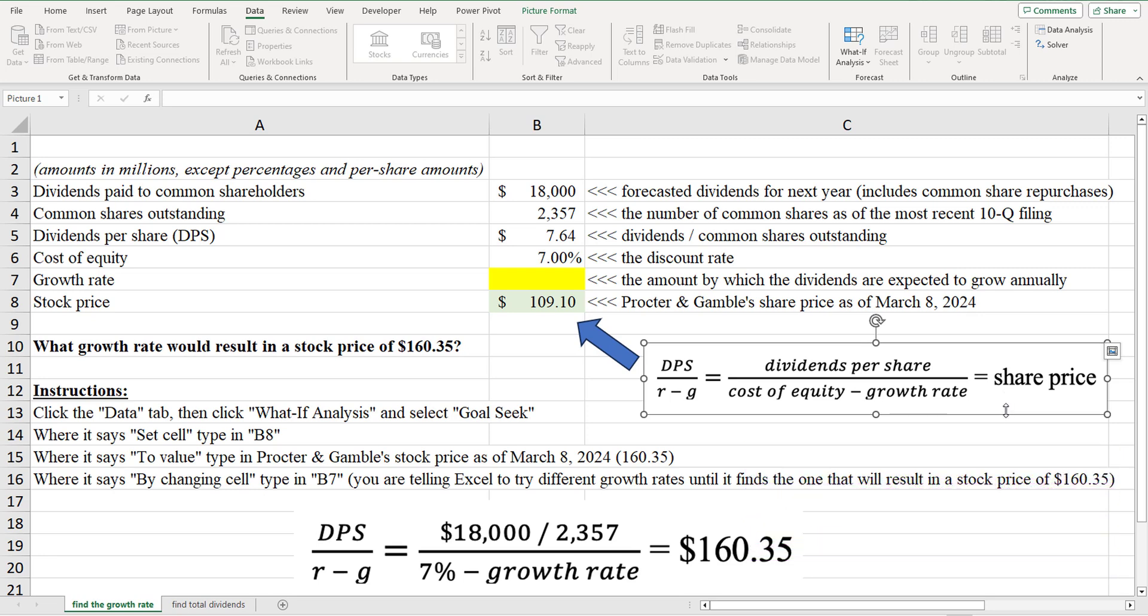Now, here's the thing. Here's how we can reverse engineer the share price. If we know what the existing share price is, and we know the forecasted dividends per share for the company, and we know the company's cost of equity, we can back out what the growth rate must be, what the market must be assuming about the growth rate of those dividends based on all the other things that we know.